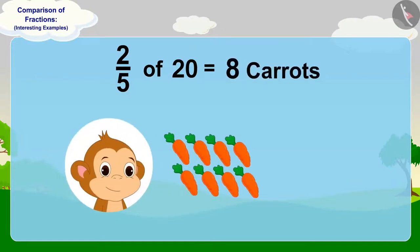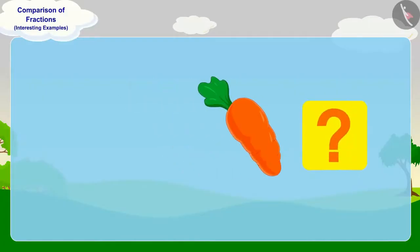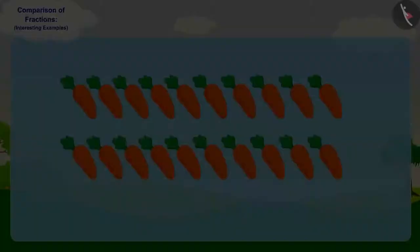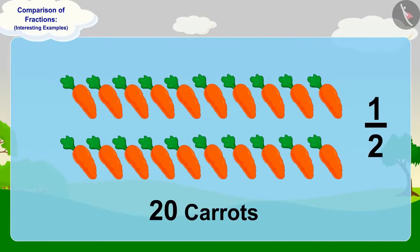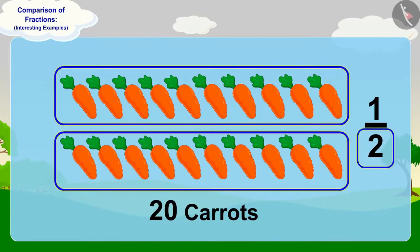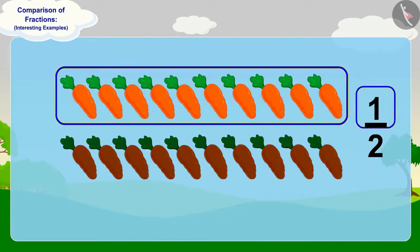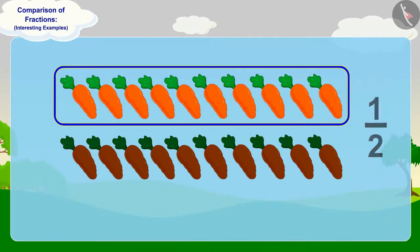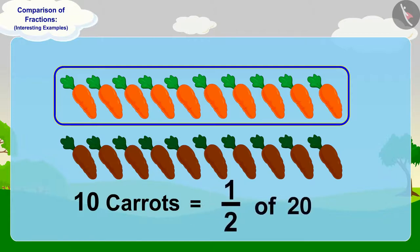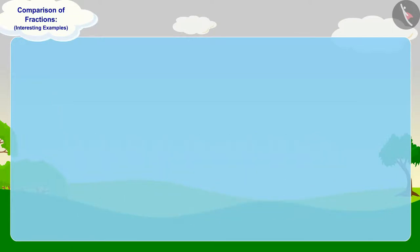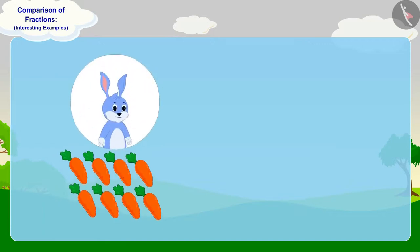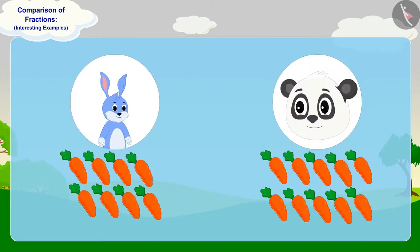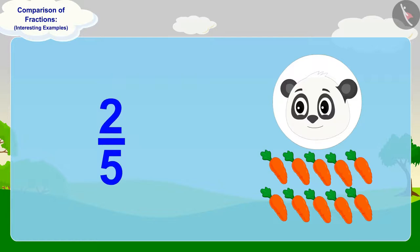Let us see how many carrots Babban will give to Golu. To find half of 20 carrots, we have to divide them into two equal parts, and then take one part from it. In this way, ten carrots will be half of 20 carrots. Babban will give eight carrots to Bunni and ten carrots to Golu. Hence, Bunni will get lesser carrots than Golu. In this way, we can see that the fraction two-fifth is less than half.